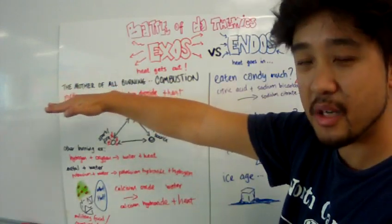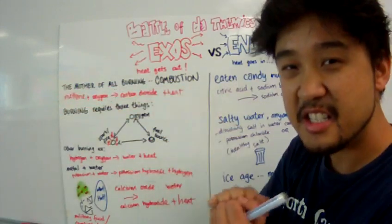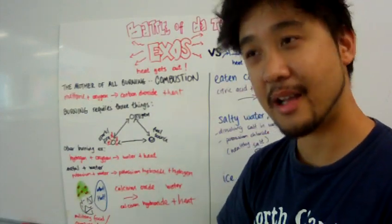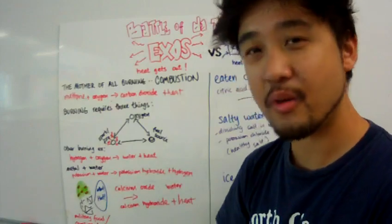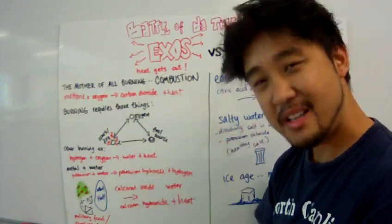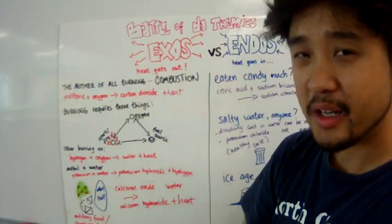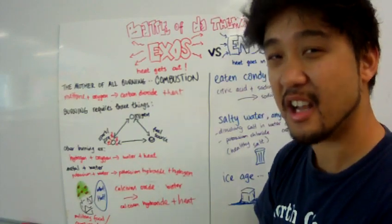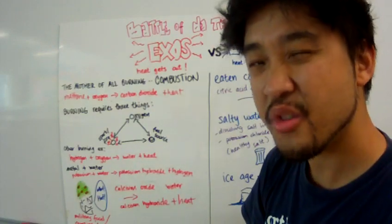An example of an exothermic process is something that you boys like to do. Burn. Light things on fire and watch it go up in flames. Now what is that. Burning is basically a chemical reaction that releases a lot of heat. An exothermic process.